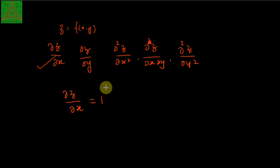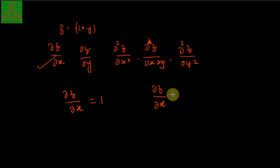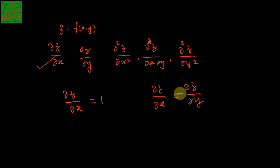For example, the simplest equation I can write is del z by del x equal to 1. Then what should be the value of z that will satisfy this equation? That is an interesting question to solve. I can also write del z by del x equal to del z by del y, and so on. Many mathematical and physics terminologies deal with more than one variable, and to see what is the change in that quantity, we need to understand partial differential equations.